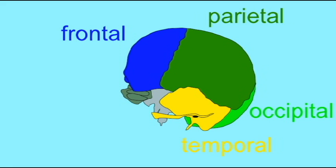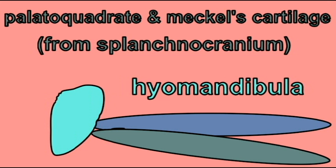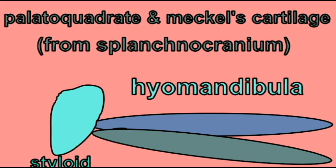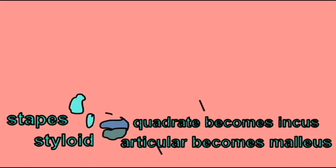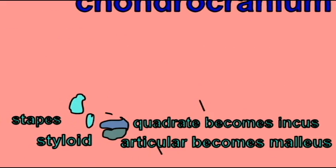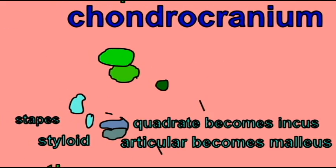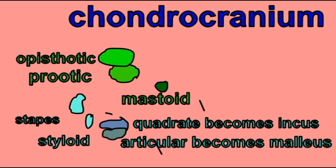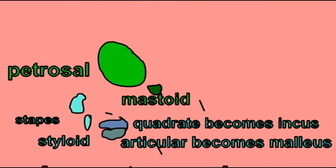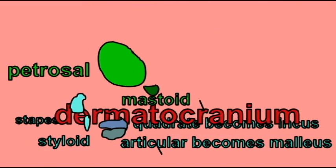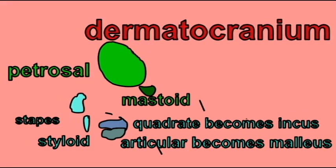The great complexities of the human temporal bone did not appear at once, but rather evolved in gradual stages. The splanchnocranium in the first vertebrates included elements which would ultimately become the styloid process and the auditory ossicles.